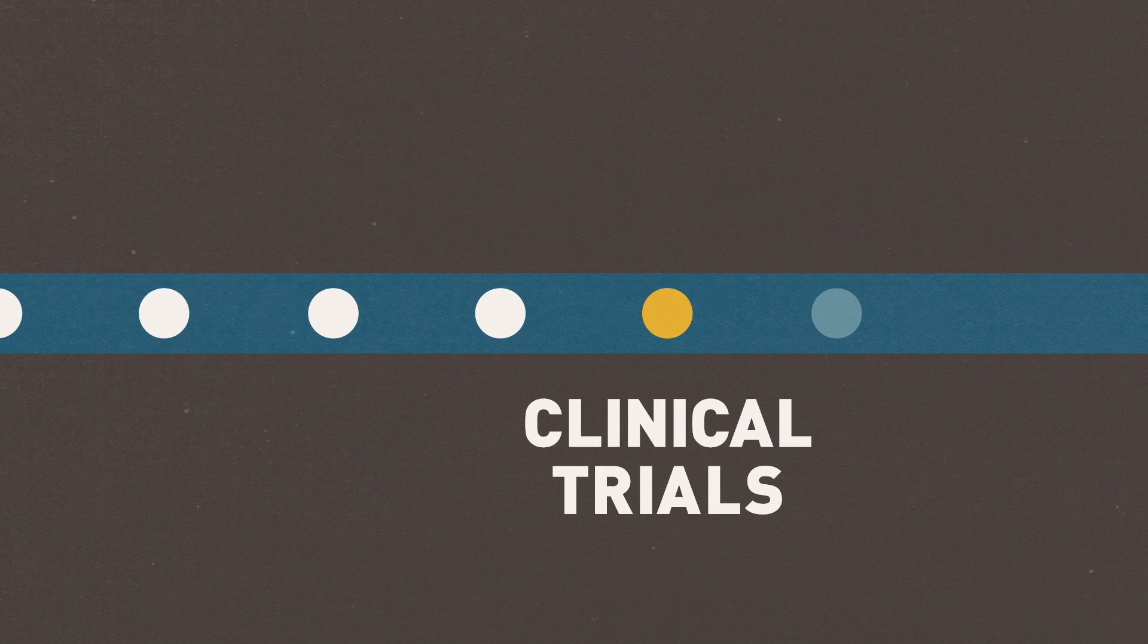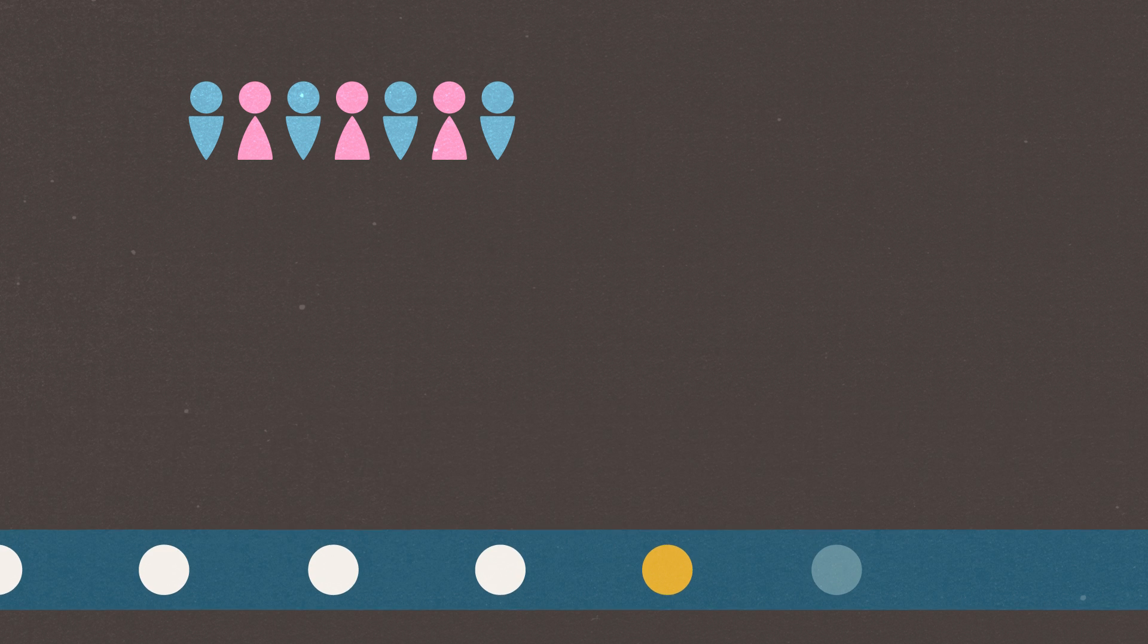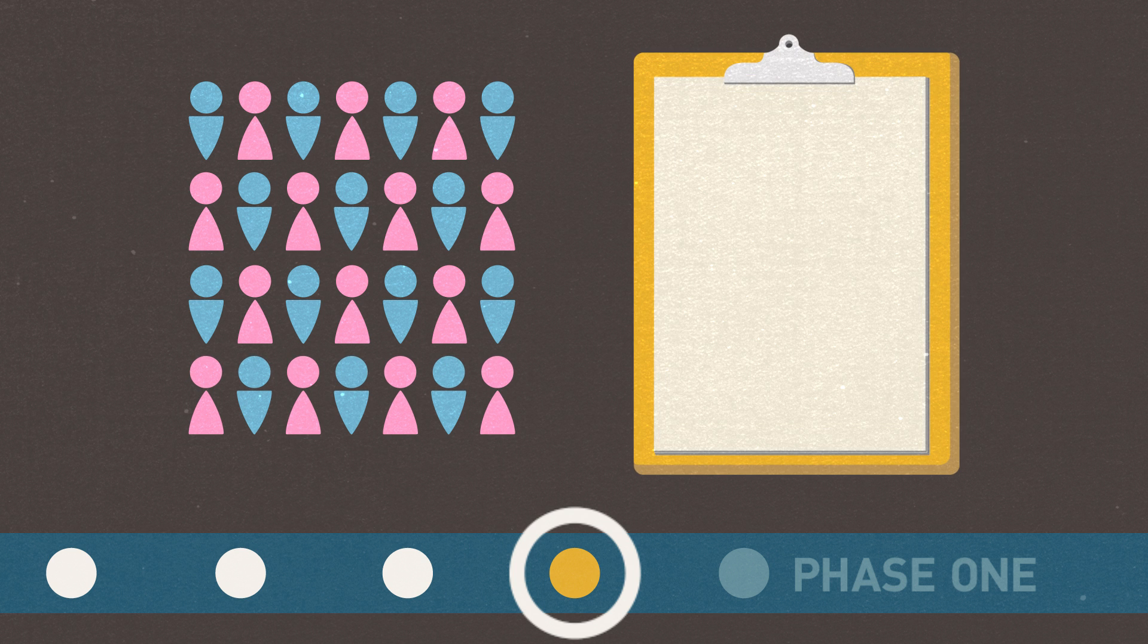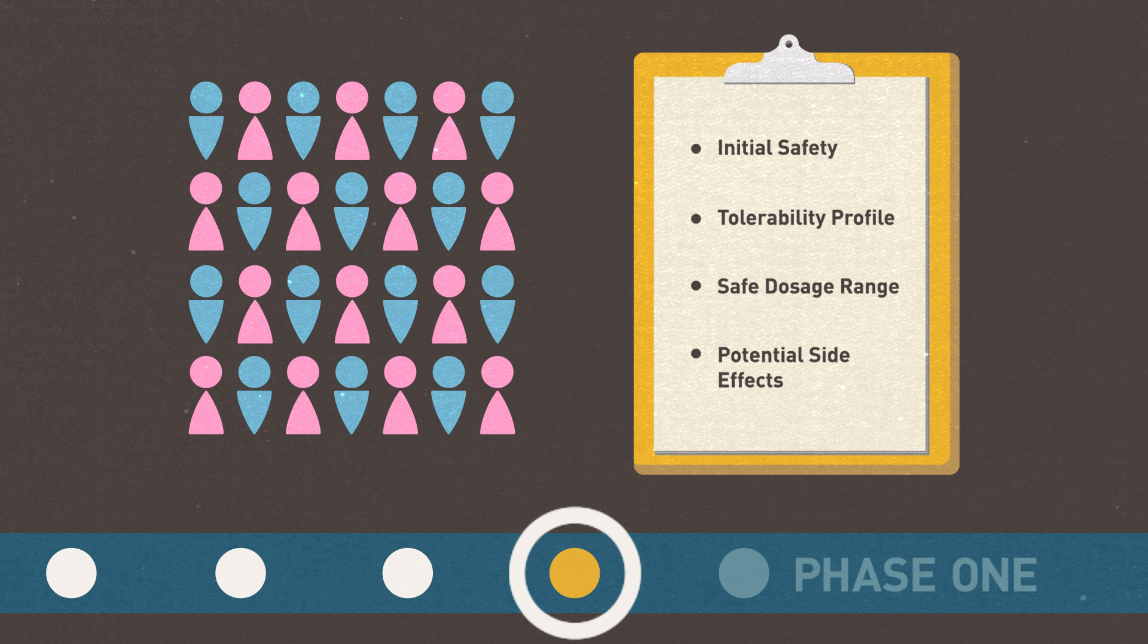Clinical trials are divided into three main phases. In phase one, researchers test the drug in a small group of people, usually between 20 and 100 healthy adult volunteers, to evaluate its initial safety, tolerability profile, determine a safe dosage range, and identify potential side effects.